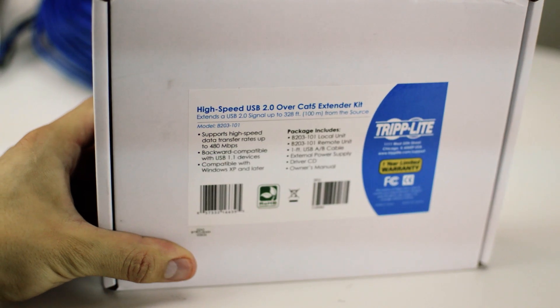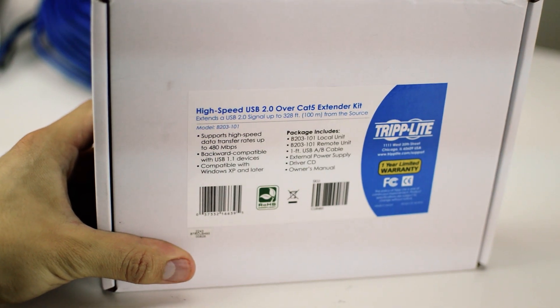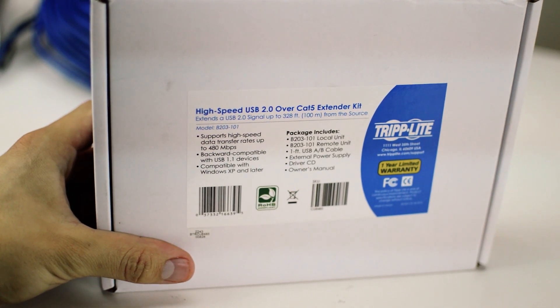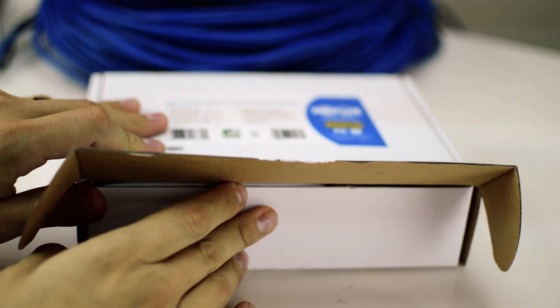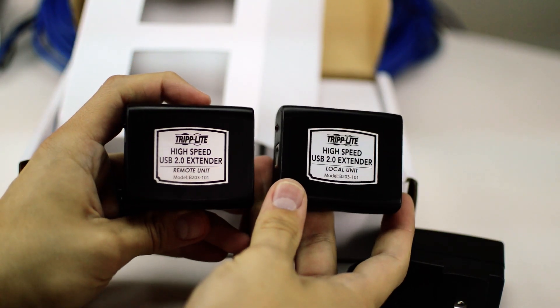Next we will test the Trip Lite USB 2.0 extender. The specs on the box say it's supposed to transfer up to 480 megabits per second. Note that it's only compatible with Windows XP and later, and it's not compatible with Mac.